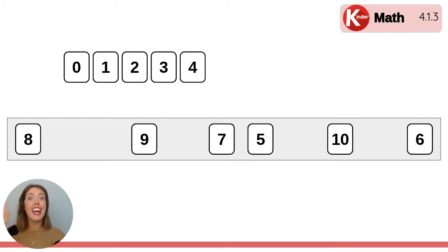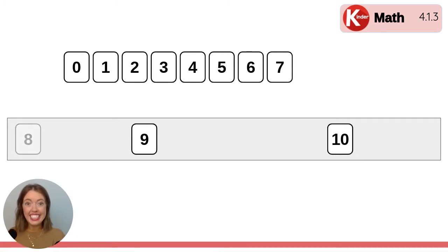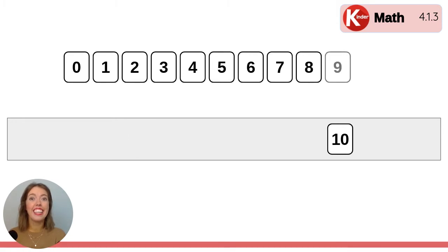Then we have four. You got it. What's next? Five. Good. Point to the next one. What number is it? Six. Yes. What's next? Point to it. Seven. And then we have eight. And then we have nine. And last we have 10.